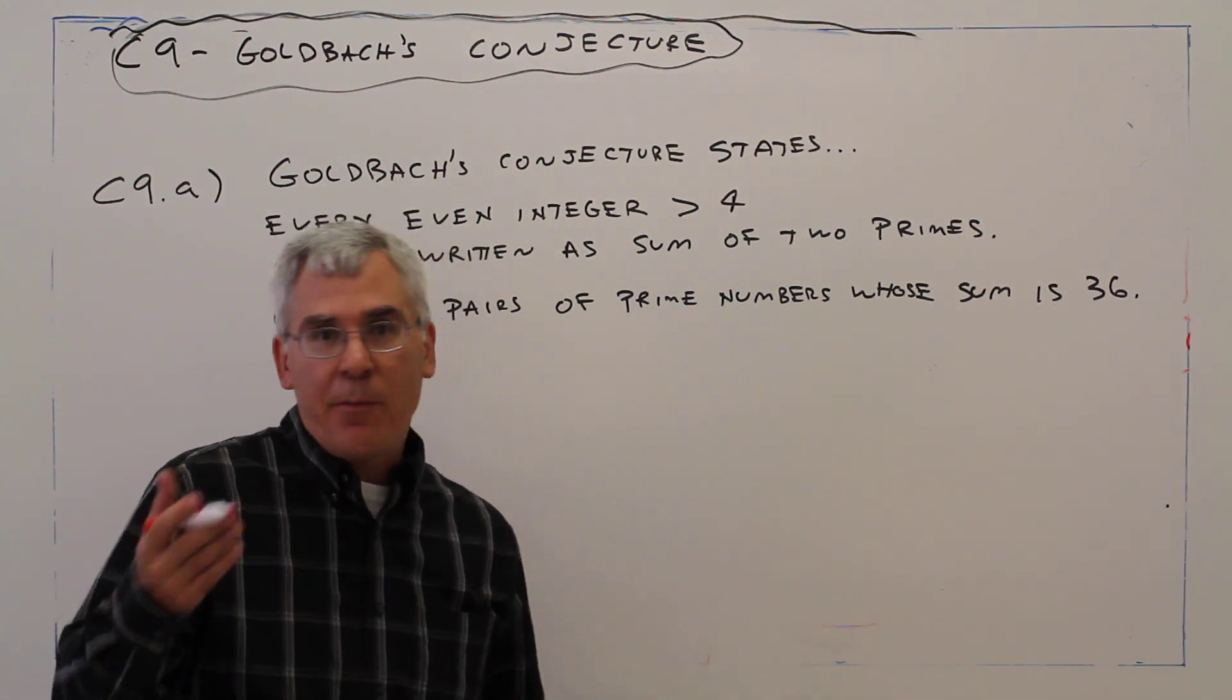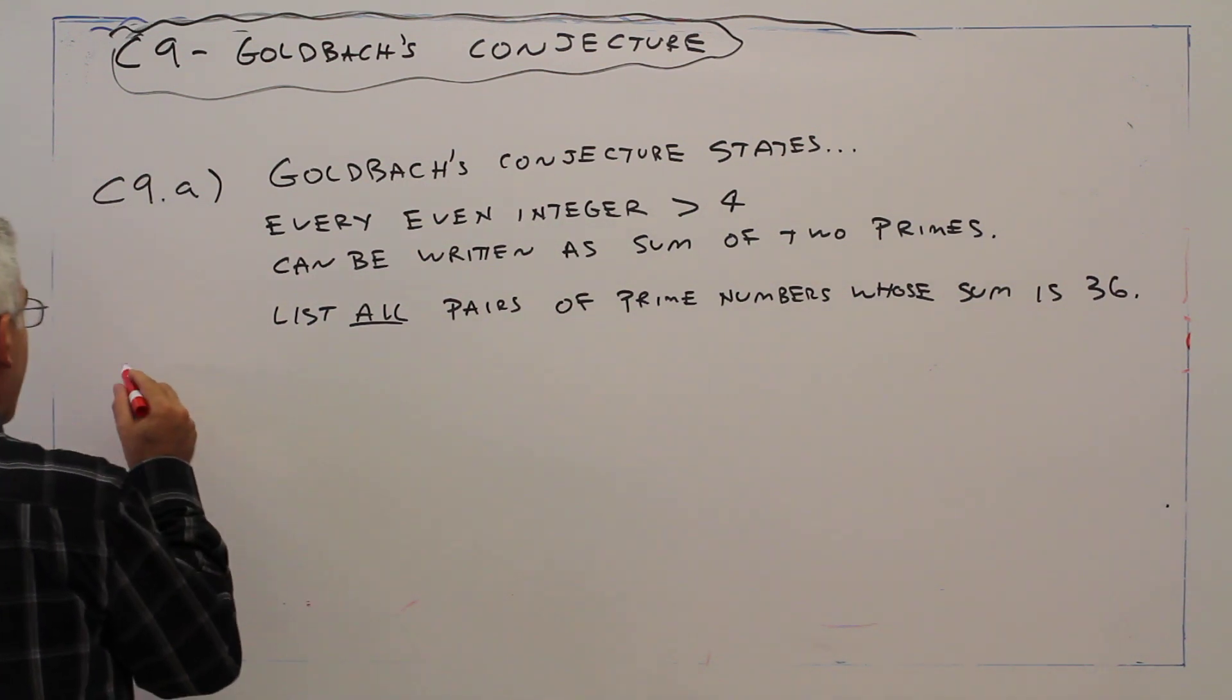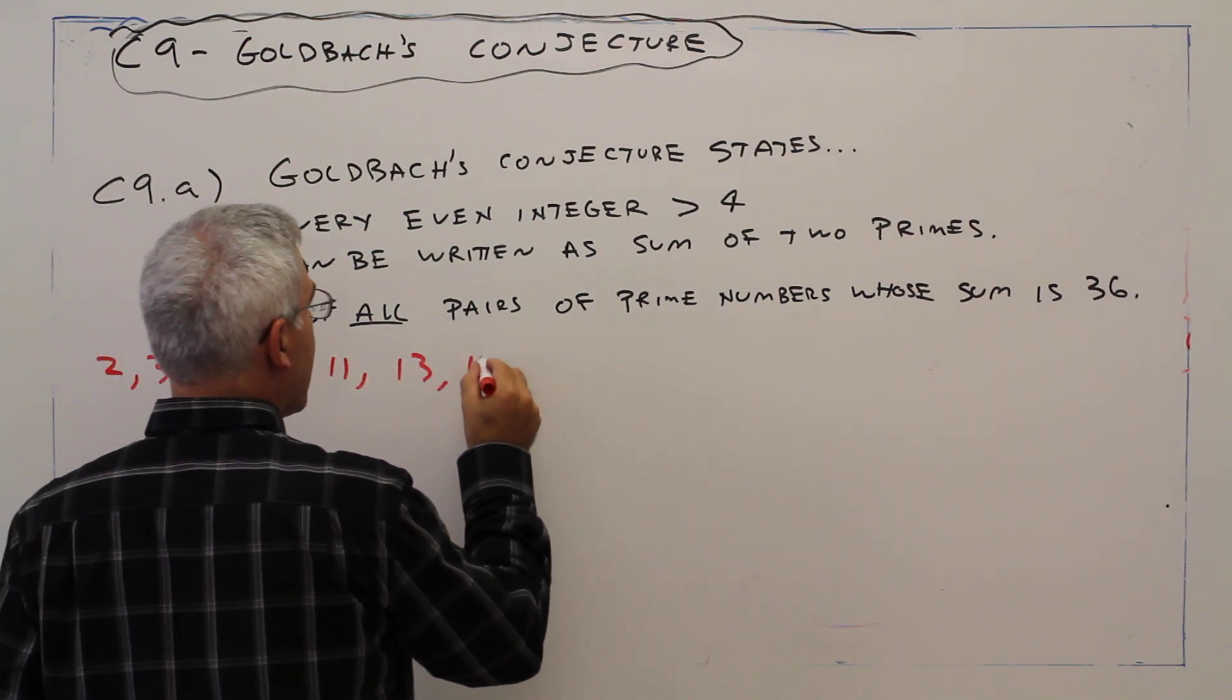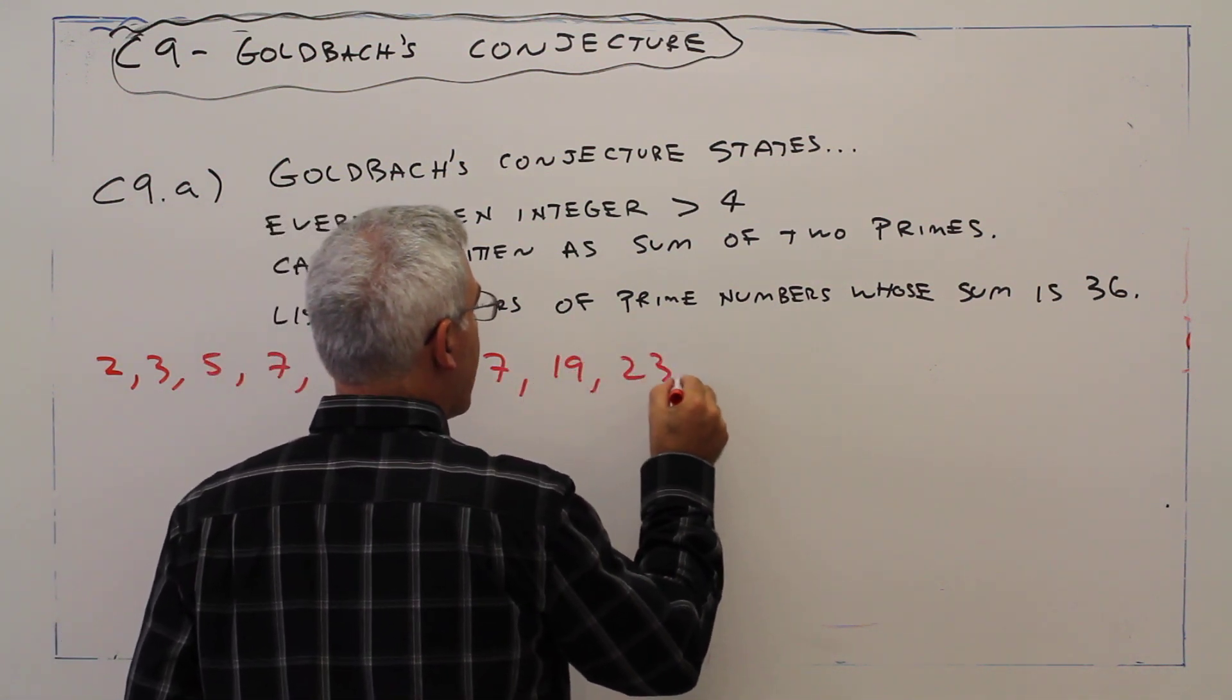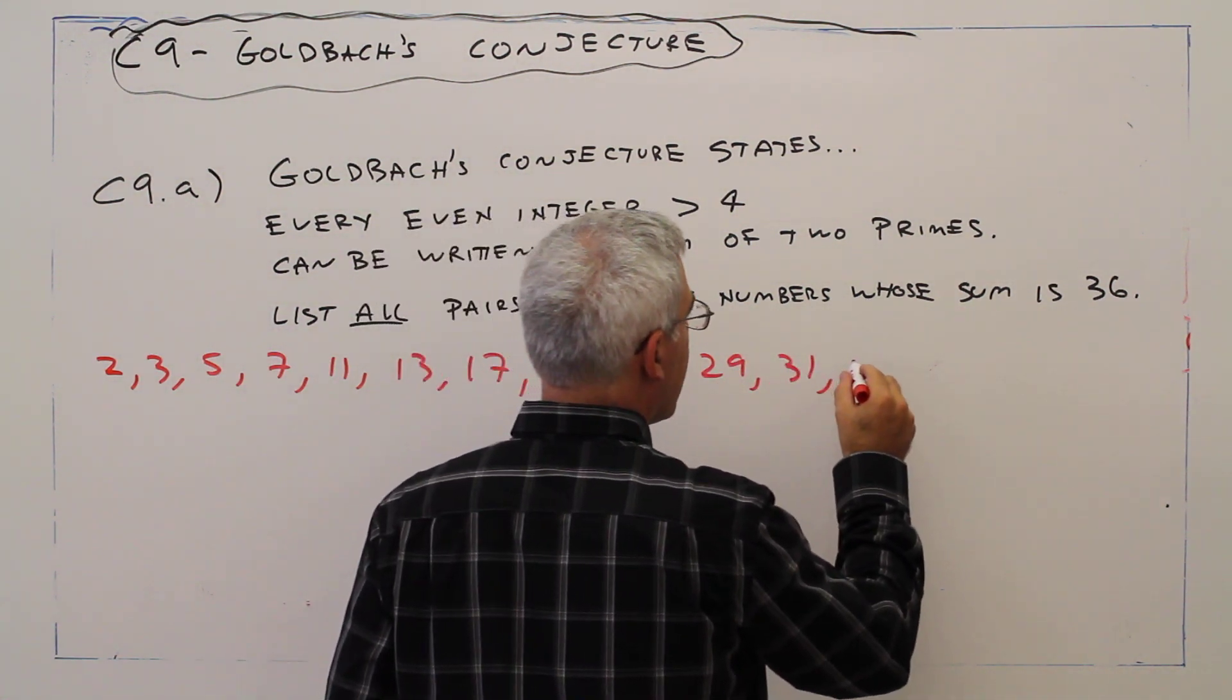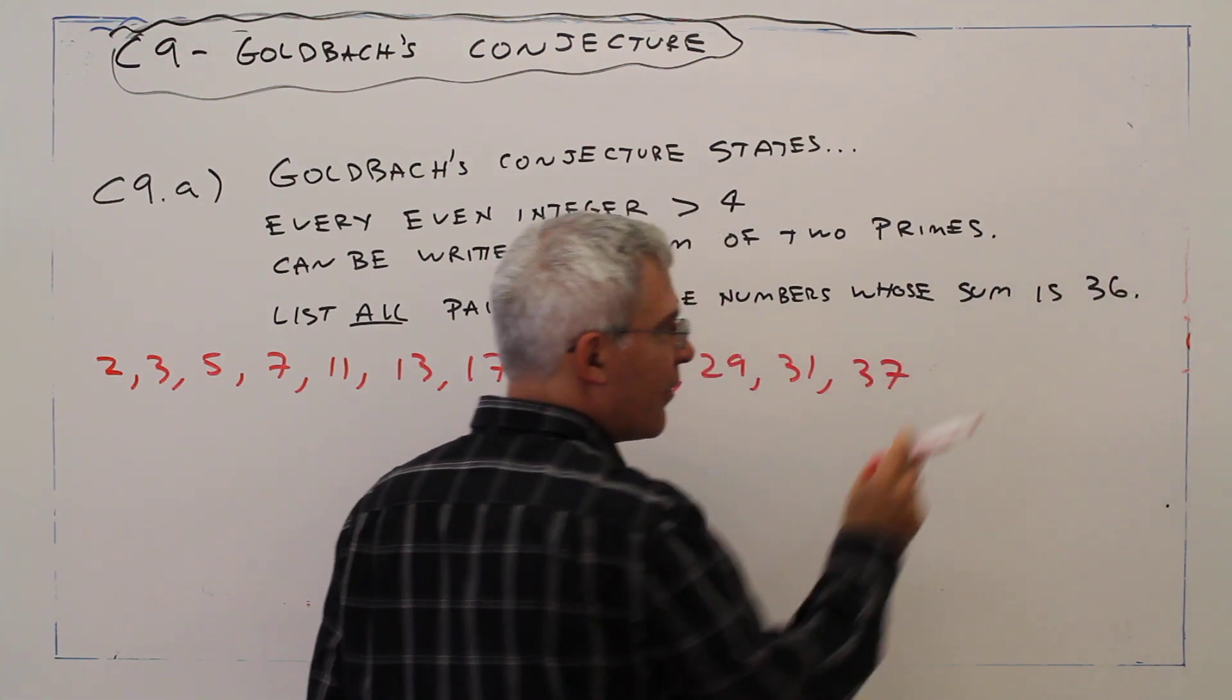So why don't we just start by making a list of primes and just seeing what works. So my list is 2, 3, 5, 7, 11, 13, 17, 19, 23, 29, 31, 37, that's too high.